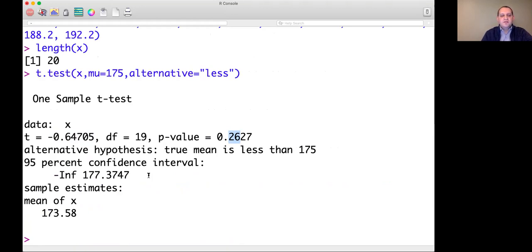This confidence interval is a little bit strange, so ignore that in this case. Confidence intervals for one-tailed tests are strange, and we're not going to talk about them in this course. The sample mean, which they give you as extra information, is 173.58.